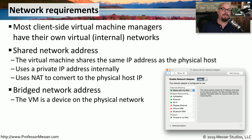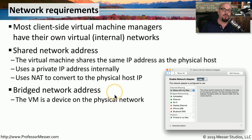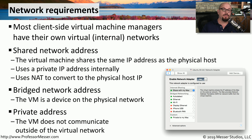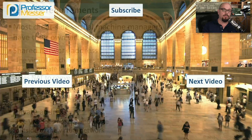If you want each virtual machine to have its own IP address on your local network, you may want to configure bridge network addressing. This means every virtual machine can use DHCP to obtain an IP address from your local DHCP server, or you can configure manual IP addressing on each individual virtual machine. And if you don't want any of your virtual machines to communicate on your local network and beyond, you can configure the VM to use private addressing, and it will only be able to communicate to other virtual machines on that private network.